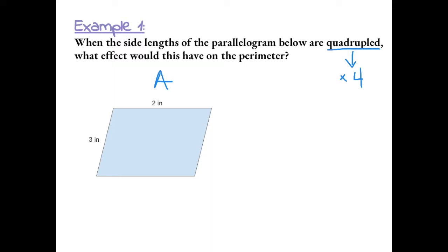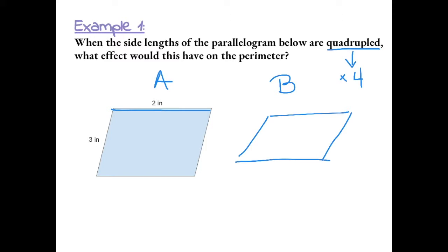So if we call this figure A, we have sides of 2 and 3. If we had a figure B where the sides of the parallelogram are quadrupled, this side which is 2 inches would be multiplied by 4, which would give us 8.